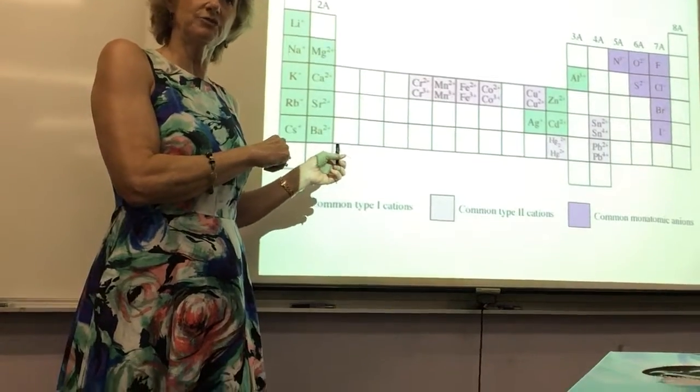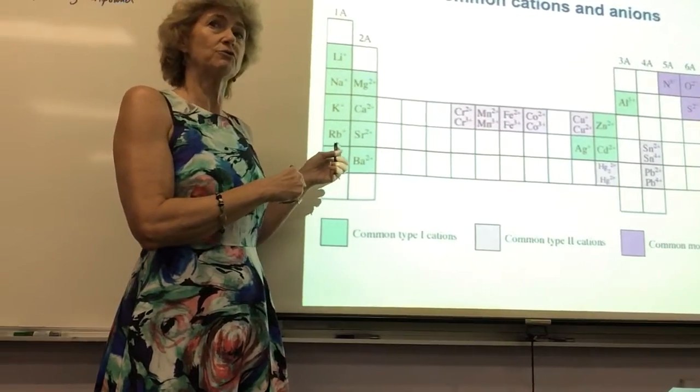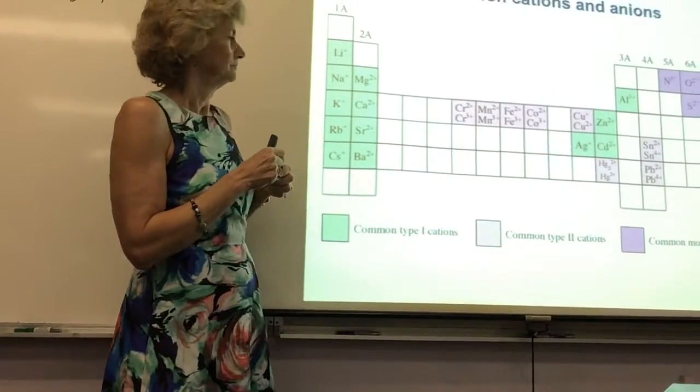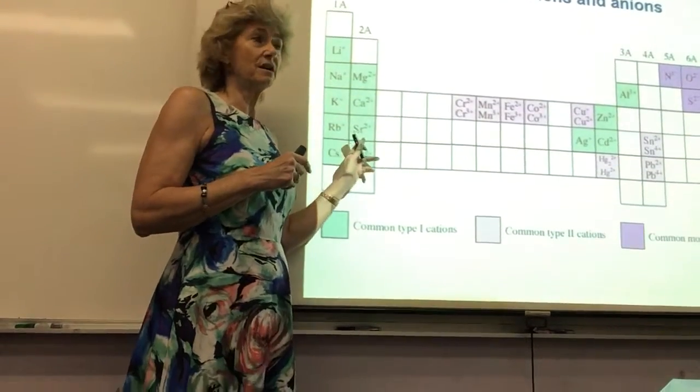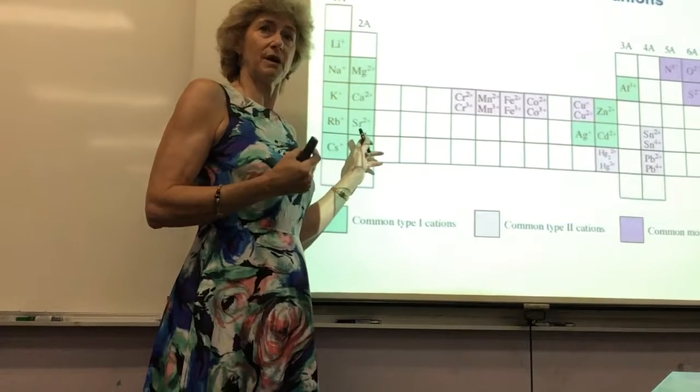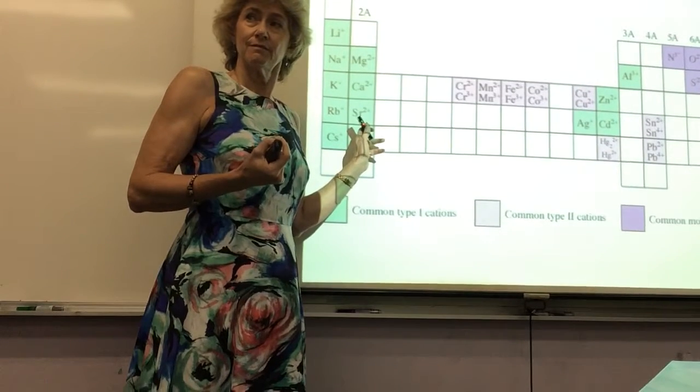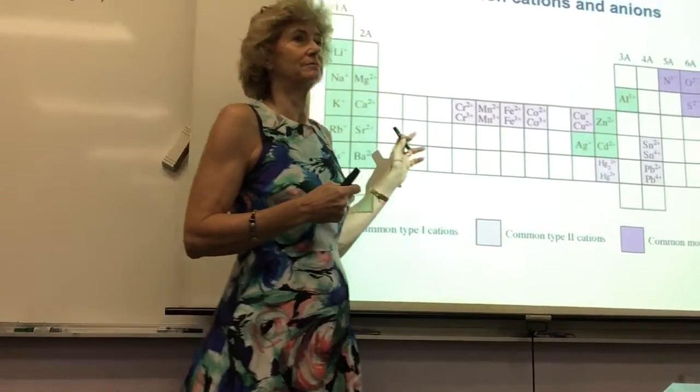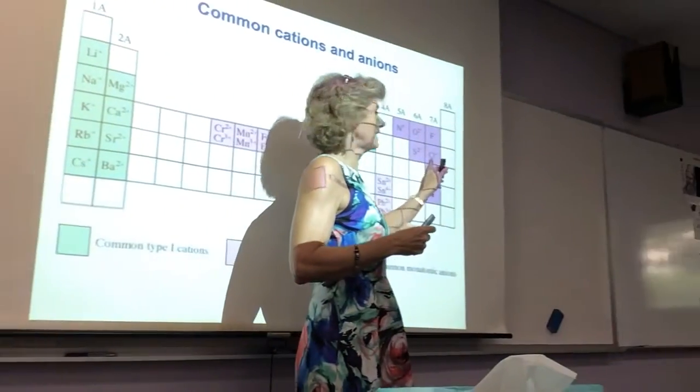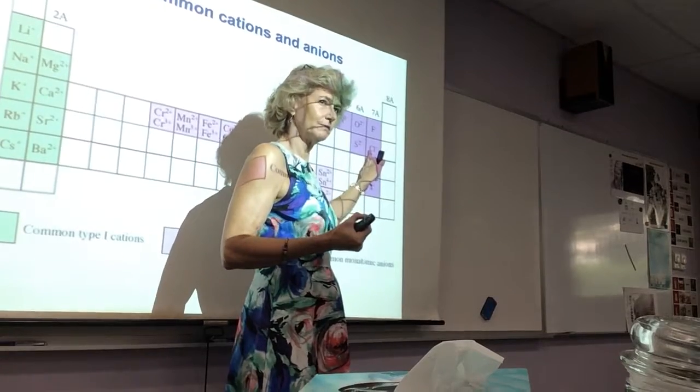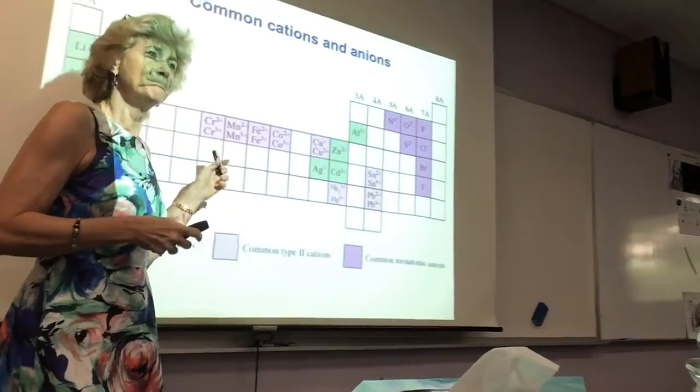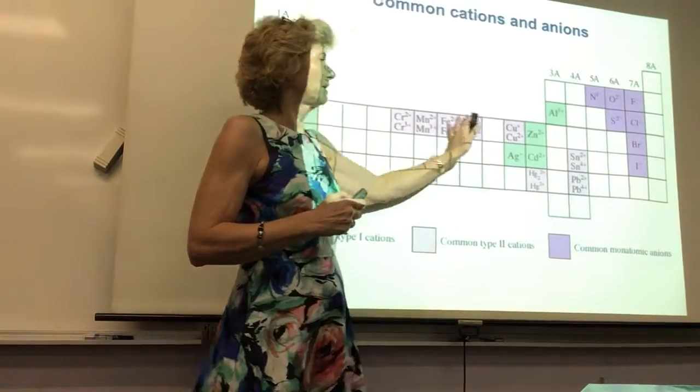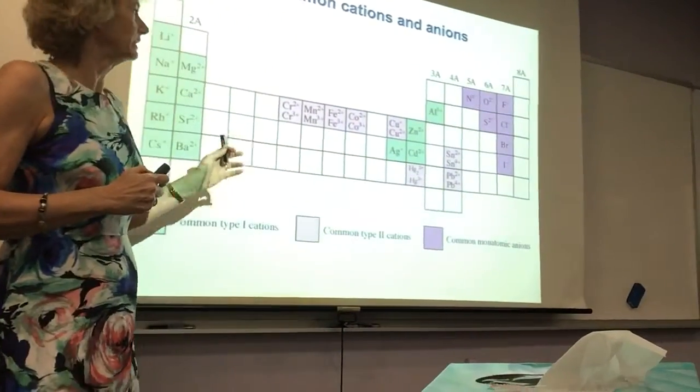You'll always have your periodic chart. You can always refer to it. Oh, what group is strontium in? Well, where's strontium? Group two. So the ion of strontium is always positive two. How about chloride? Where's chlorine? Group seven. So the chloride ion is always minus one. That's the key to understanding this. You'll always have your periodic chart. These guys have multiple. I'll show you how to do those in a minute.